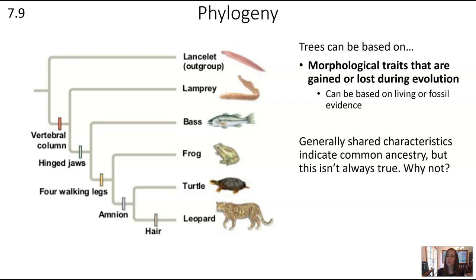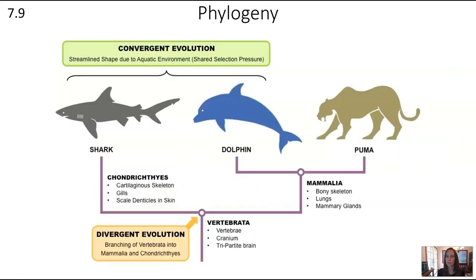We have to be careful, though, because shared characteristics are not always indicative of common ancestry — that would be convergent evolution. For example, a shark and a dolphin have similarities in structure, behavior, and physiology because they share selection pressures from living in aquatic environments, not because they are most closely related. On this tree, the traits that define relationships are those from true evolutionary history; independently, the dolphin and shark branches may evolve similar traits for their shared environment, but that does not imply close relation.